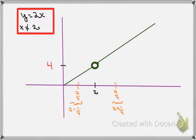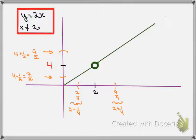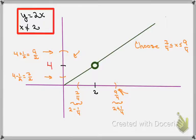Putting this all together on the graph: as long as I pick x values within 2 plus one-fourth (nine-fourths) and 2 minus one-fourth (seven-fourths), I'm guaranteed that my y value will be somewhere between 4 plus one-half (nine-halves) and 4 minus one-half (seven-halves). So if x is between seven-fourths and nine-fourths on the x-axis, the y values are guaranteed to be between seven-halves and nine-halves. Choosing x between seven-fourths and nine-fourths guarantees y is between seven-halves and nine-halves.